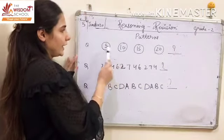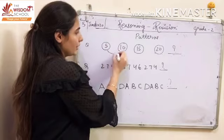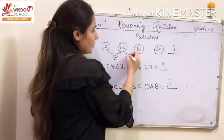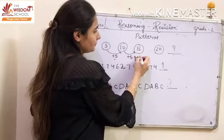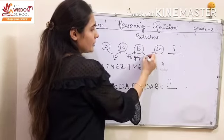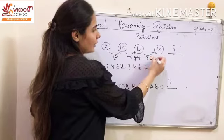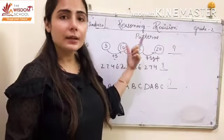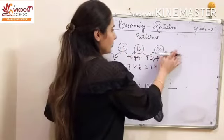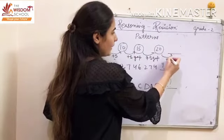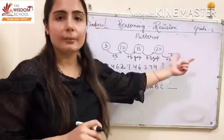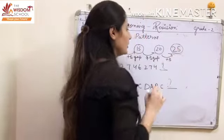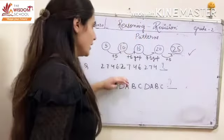When you go from 5 to 10, you will see a 5-digit gap. Then again, 10 to 15 — 5-digit gap. Then 15 to 20 — again a 5-digit gap. So this is our final answer.